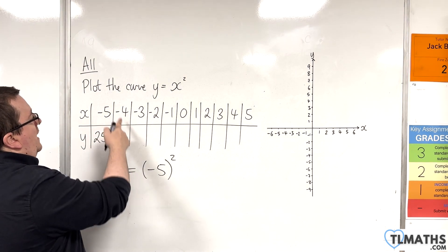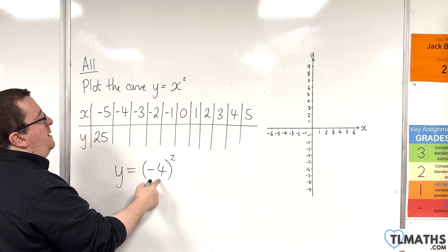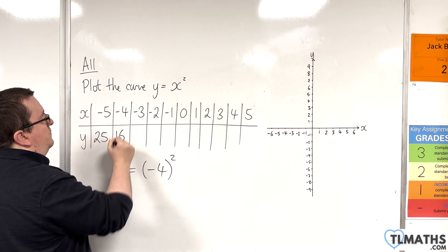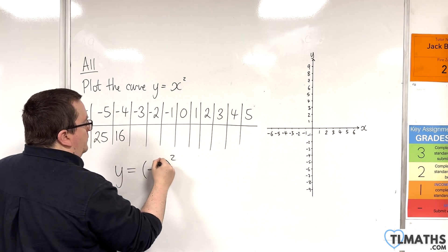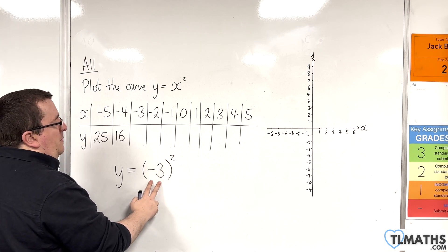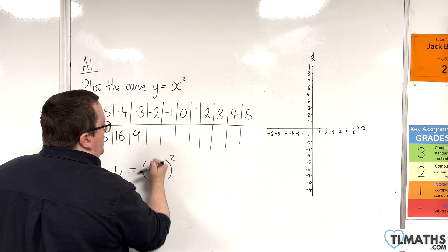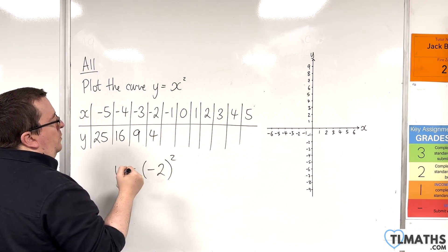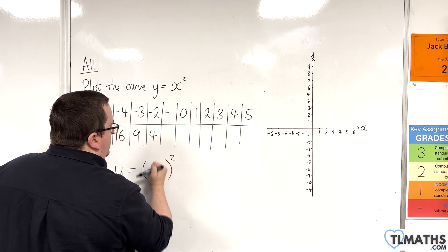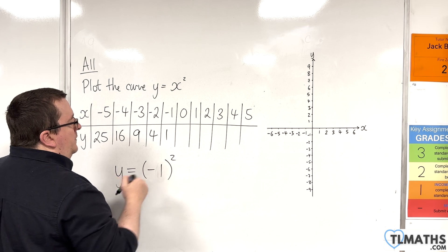Then, we'll have x equals minus 4. Minus 4 times minus 4 will be positive 16. Then, when x is minus 3, we're going to get minus 3 times minus 3, which is positive 9. Then, we'll have minus 2 times minus 2, which is positive 4. And then, minus 1 times minus 1 is positive 1.